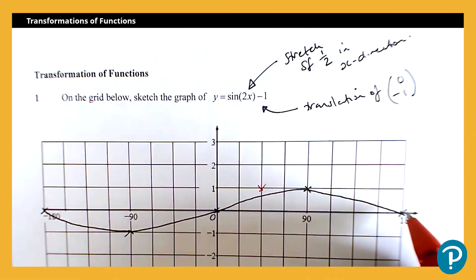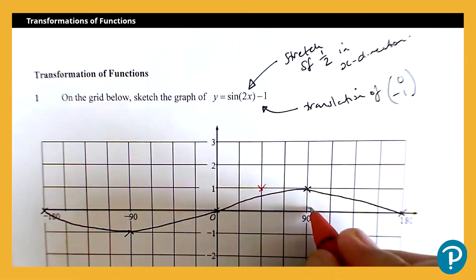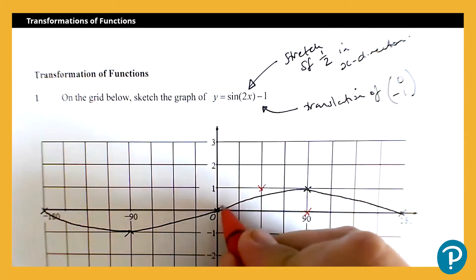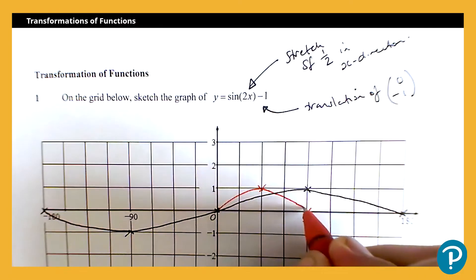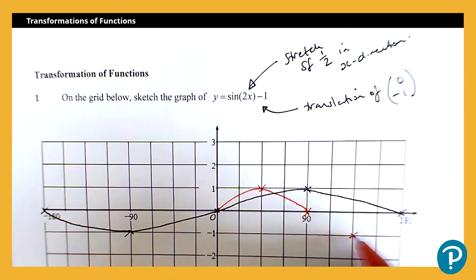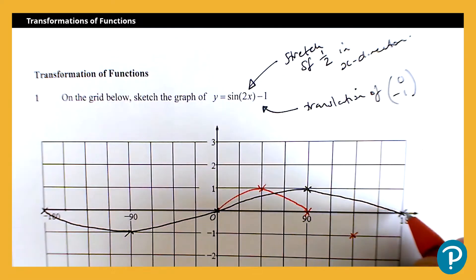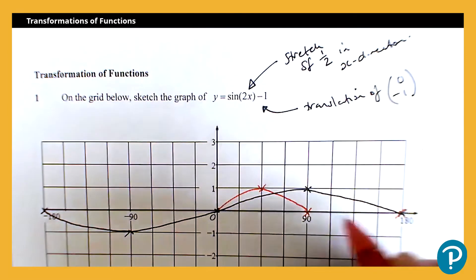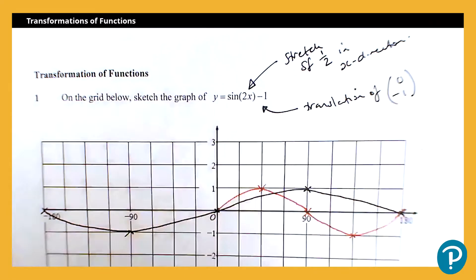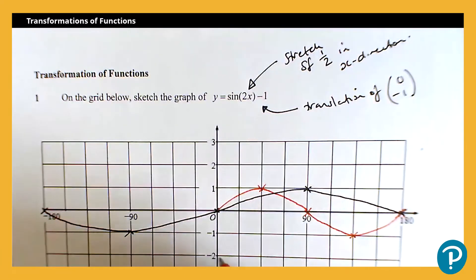And the value at 180, 0 will move to 90, 0. Now we should, by looking at just that part, be able to see what the graph will do. So it will continue in that way. So it will go through 135, negative 1, and then it will still go through 180, 0. So it will come like that.